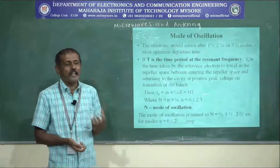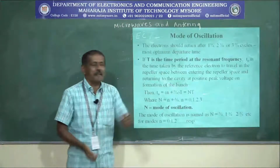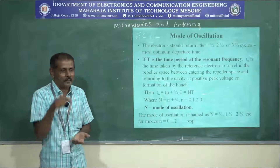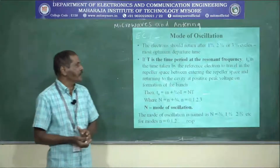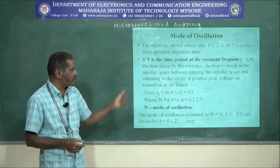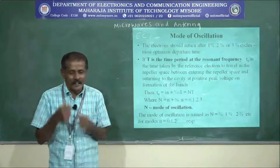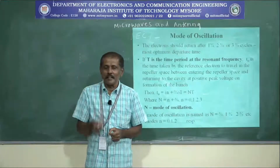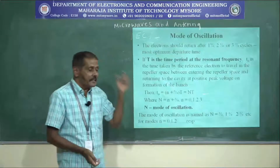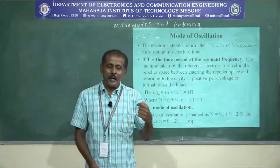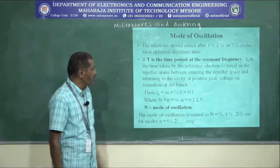This cavity has a certain resonant frequency. If T is the time period of the resonant frequency, then F equals one by T, or T equals one by F. If T is the resonant frequency of the cavity, and small t-zero is the time taken by the reference electrons to travel in the repeller space between entering the repeller space and returning to the cavity at positive peak voltages — that is the time taken by a reference electron, which is one that doesn't come across either a positive, negative, or neutral potential — that is the time taken to move from the grid space to the repeller and back to the grid space. So that time is T0.